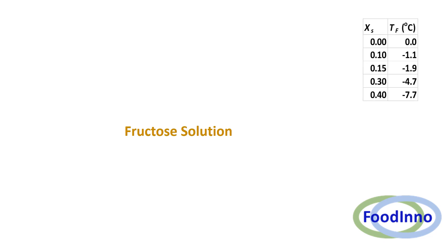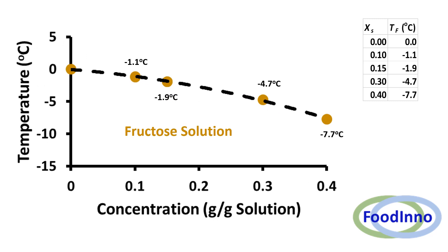Consider fructose solutions of 10%, 15%, 30%, and 40% concentration — the measured freezing points are −1.1°C, −1.9°C, −4.7°C, and −7.7°C respectively. Plotting the freezing point as a function of solid concentration gives what is called the freezing curve — the relationship between freezing point and solid concentration. For foods, we consider multiple solutes including both soluble and insoluble solids.